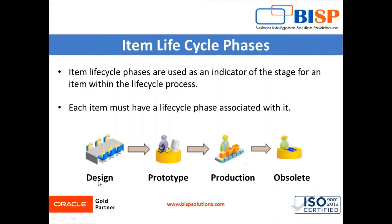After defining the design, the design department sends our design to the next phase — that is prototype. In the second phase we have to make a prototype model for our water bottle. The prototype phase is also known as the pre-production phase. After creating the prototype model we send it to the production or manufacturing department, and with the help of the prototype model it starts batch production of the water bottle. The last phase is obsolete. So the phases are: design, pre-production or prototype, production, and obsolete. All lifecycle phases are predefined in the application.